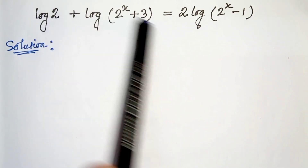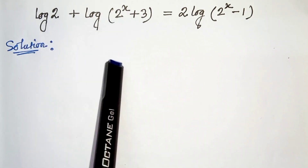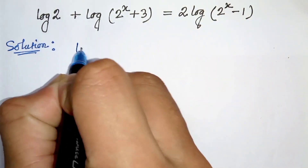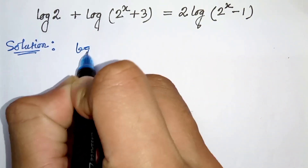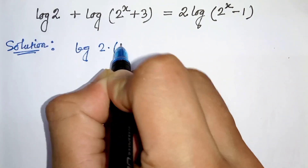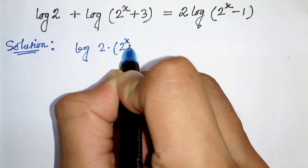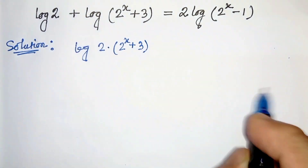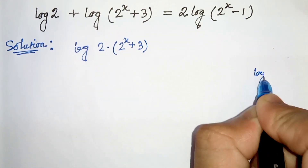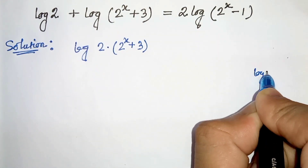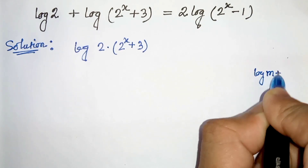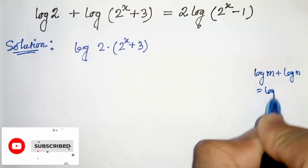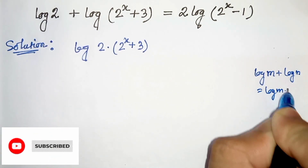First of all, on the left hand side, by using the product law we can write this as log of 2 times 2 to the power x plus 3, since the product law states that log of m plus log of n can be written as log of m times n.